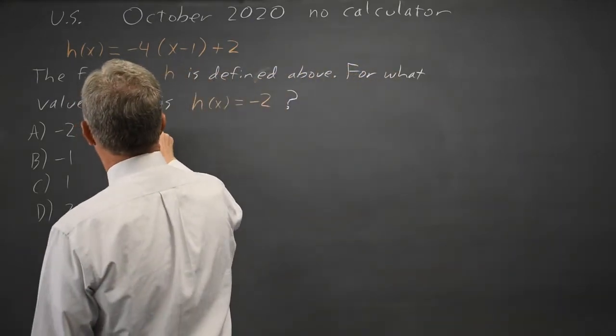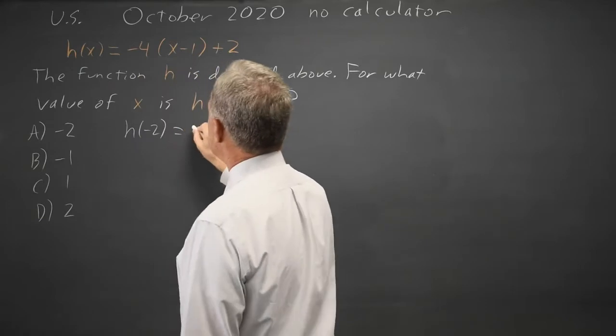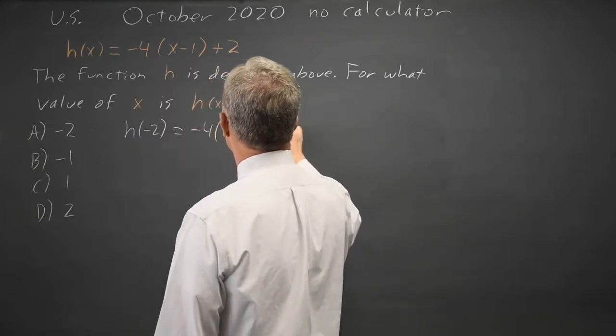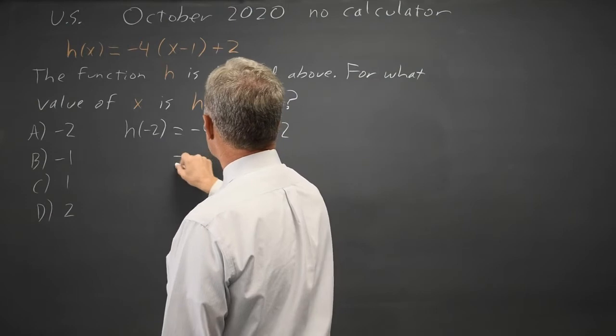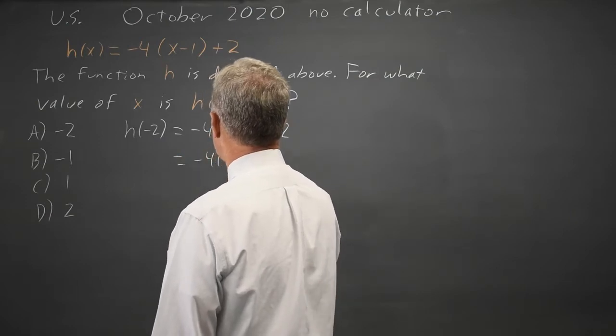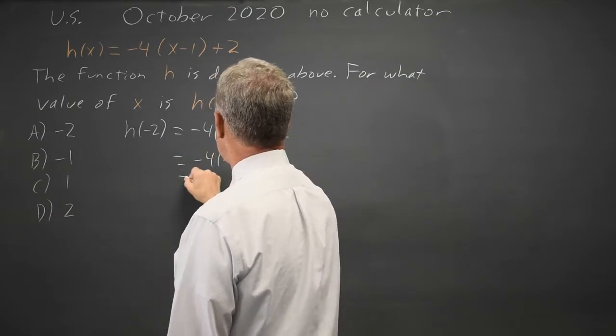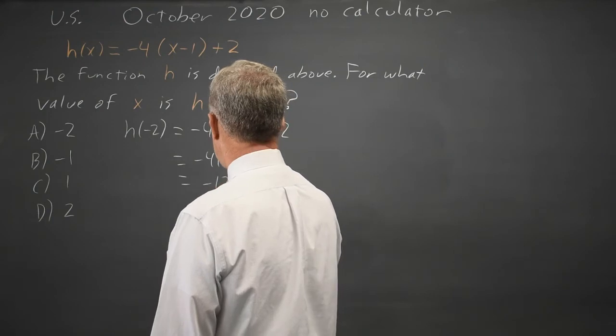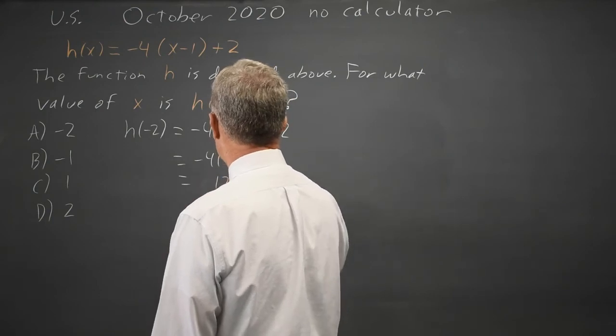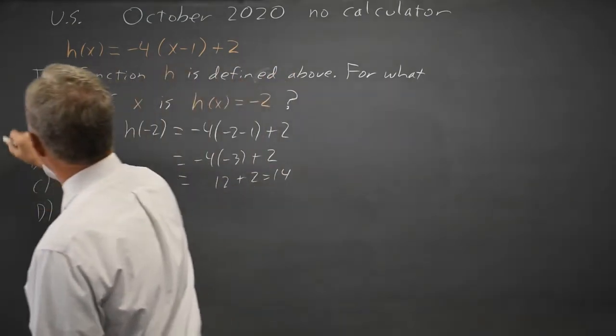I'll start with h(-2), choice A, which is -4(-2-1)+2. So that's -4(-3)+2 is positive 12+2 equals 14. That is very wrong.